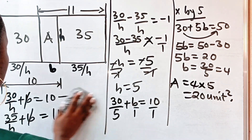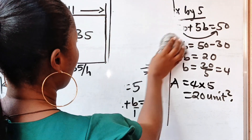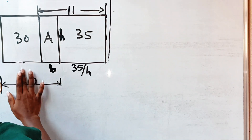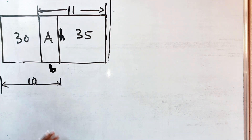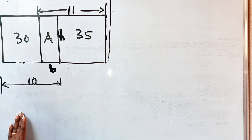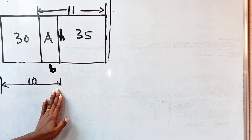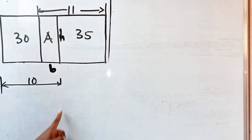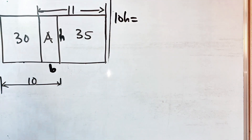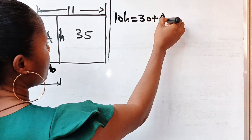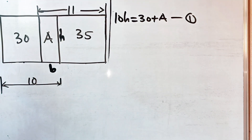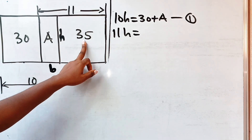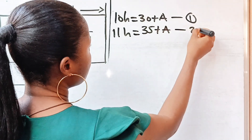Now let us do the second method. We can say that this area is 30 and from here to here is 10, so 10 times the height gives the total area from that side: 10h equals 30 plus A — let's call this equation 1. Similarly, 11h equals 35 plus A — this is equation 2.